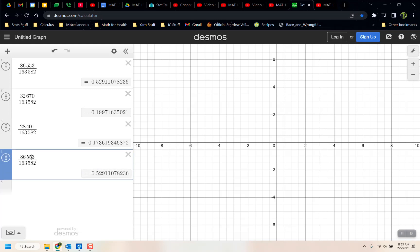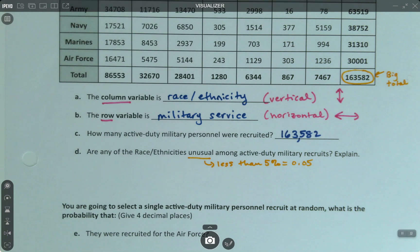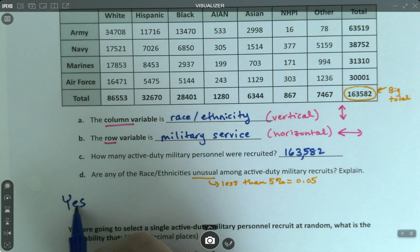Now what about AIAN, which stands for American Indian Alaskan Native? So that would be 1,280. Definitely unusual. So there's one. I can actually just change these ones, so let me shift that one. So that's that one. Now what about Asian? Asian is 6,344. That's unusual as well. That's lower than 0.05. And NHPI is 867. So that's Native Hawaiian Pacific Islander, and that's very unusual. And then other, let me just grab one more. Other would be 7,467. Unusual. It's just under 0.05. It's at 0.0456.